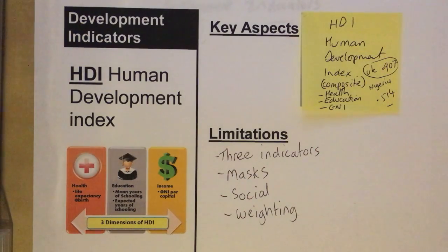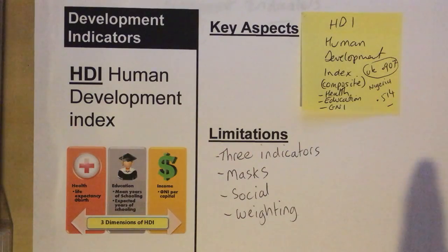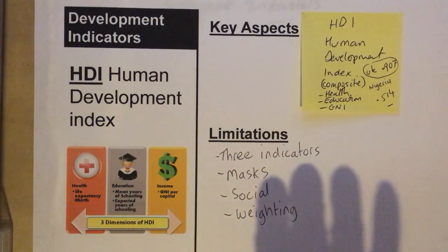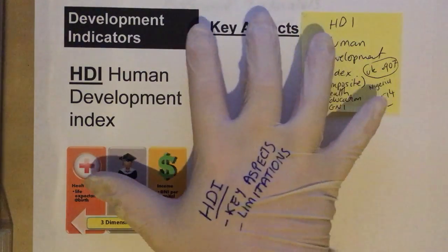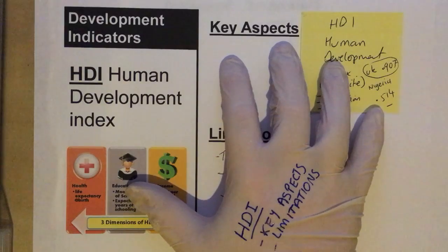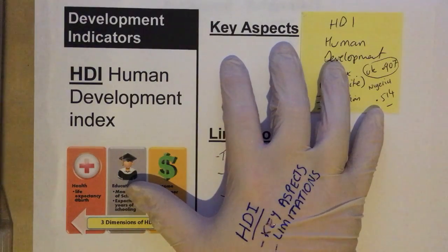This is a good indicator because it takes into account three different indicators, so it starts to level out and even out some of the issues from those other individual indicators.